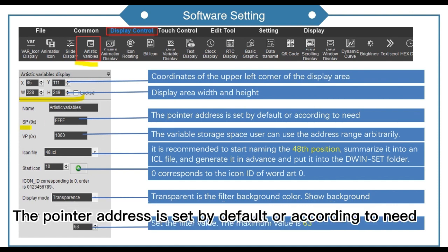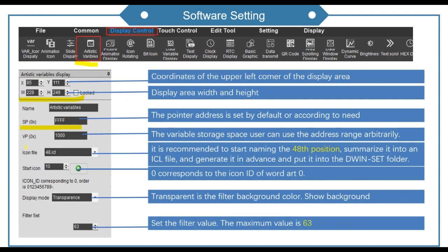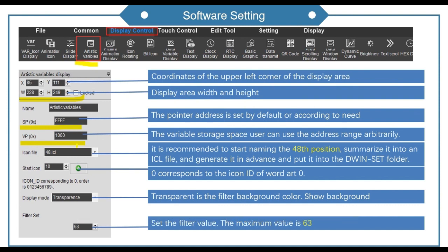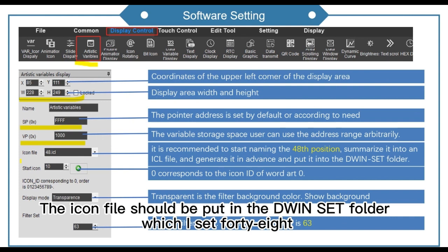The pointer address is set by default or according to need. The variable address I set 1000. The icon file should be put in the join-act folder, which I set 48.